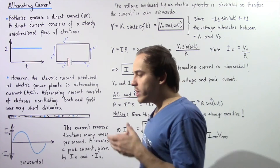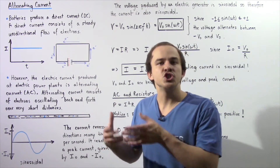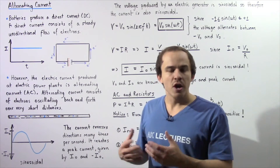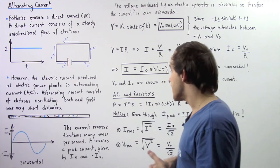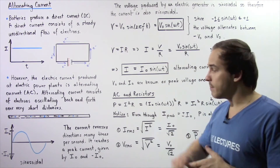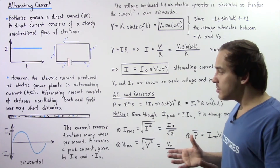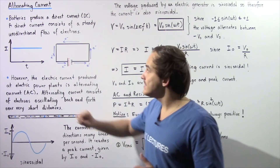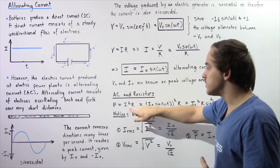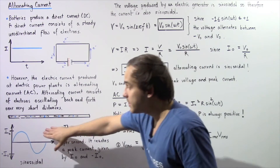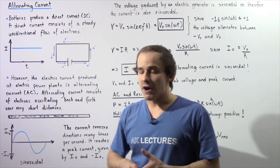Now let's discuss power. Whenever an electric company supplies us with electricity, at the end of the month they charge us for how much energy or power we consumed. They want to use the equation: power equals resistance times the square of the current — P = I²R. The problem is our current isn't steady like in DC. In DC we simply square a constant current and multiply by R. But in AC, the current I is not constant — it always varies, as shown in the diagram. So which I value should we use?